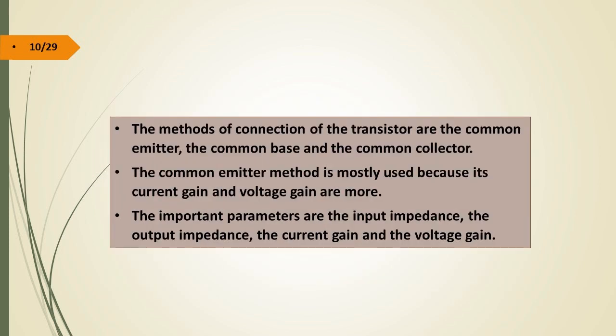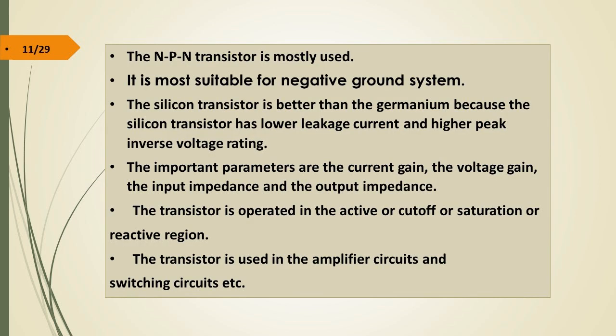The configurations of the transistor are the common emitter, the common base, and the common collector. The common emitter method is mostly used because its current gain and voltage gain are more. The important parameters are the input impedance, the output impedance, the current gain, and the voltage gain. The NPN transistor is mostly used as it is most suitable for a negative ground system. The silicon transistor is better than the germanium because it has lower leakage current and higher peak inverse voltage rating.